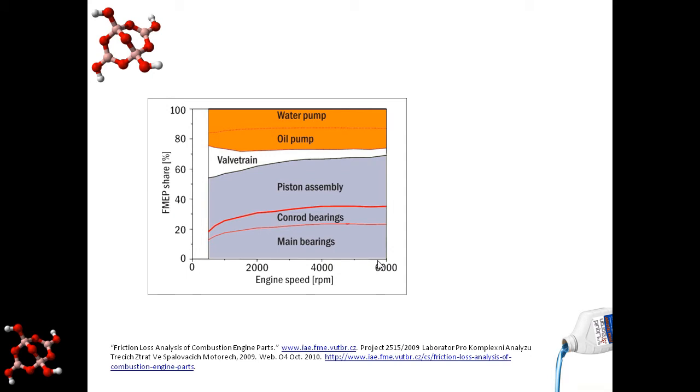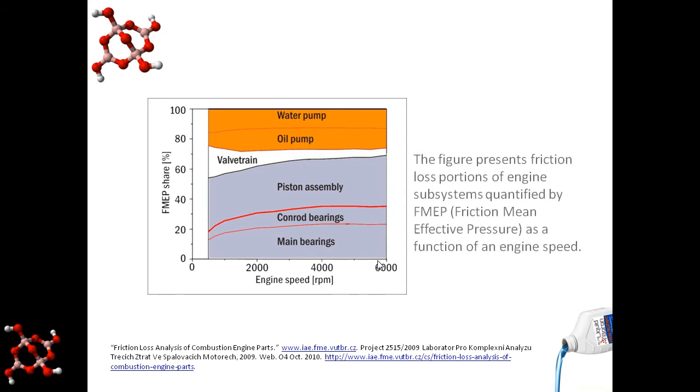Further engine tests show that in main lubricated components the loss due to friction is 70%, and the balance goes to scavenger operations such as water pumps and oil pumps.